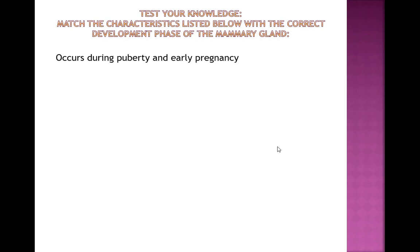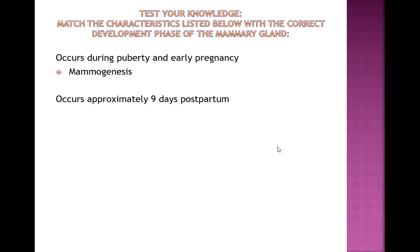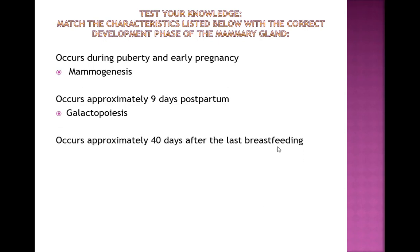Which phase of mammary gland development occurs during puberty and early pregnancy? — Mammogenesis. Which phase occurs nine days postpartum? — Galactopoiesis. Which phase occurs 40 days after the last breastfeeding? — Involution.